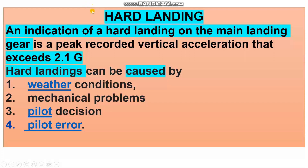This is the subject now: the aircraft hard landing. What is the indication of hard landing on the main landing gear? A peak recorded vertical acceleration that exceeds 2.1 G.